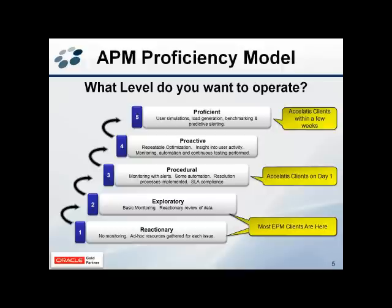When you first get involved with Oracle EPM, you start out at the lowest levels where you really don't have monitoring in place, and all of your diagnosing and troubleshooting is reactionary and ad hoc. As you evolve and get more proficient, you incorporate more monitoring with alerts, some automation, and a better feel for what users are doing in the system. Ultimately you can get very proficient with predictive alerting, capacity planning, benchmarking, and baselining. The promise of the Excelsis solution is that we can enable clients to achieve the highest level of the proficiency model in a very short amount of time.